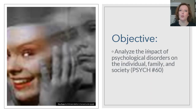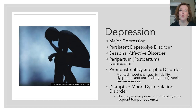Our objective is to analyze the impact of psychological disorders on the individual, family, and society. We're going to be talking about two families of disorders. The first one is the family of depressive disorders, and it contains a number of different types: major depression, persistent depressive disorder, seasonal affective disorder, peripartum or postpartum depression, premenstrual dysmorphic disorder, and disruptive mood dysregulation disorder.